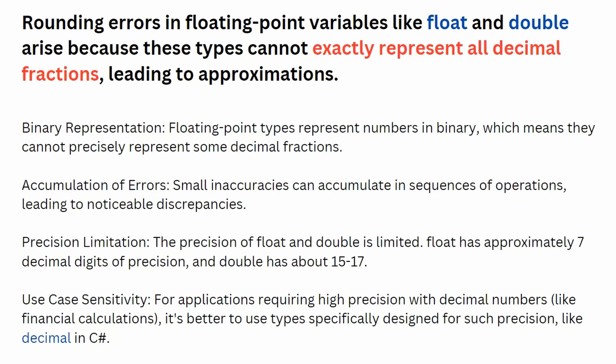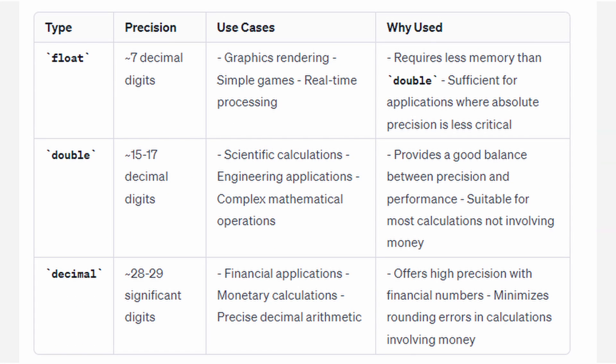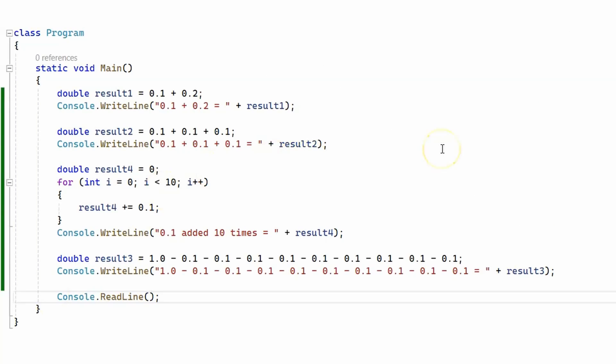So let's see in which cases you might want to use float and double versus decimal. These are some of the use cases for float, double, and decimal in C#. The main takeaway is: if you want performance, you may be inclined to use float or double; if you want precision, you should use decimal. Now let's go back to more code examples showing how using double for arithmetic can lead to errors.